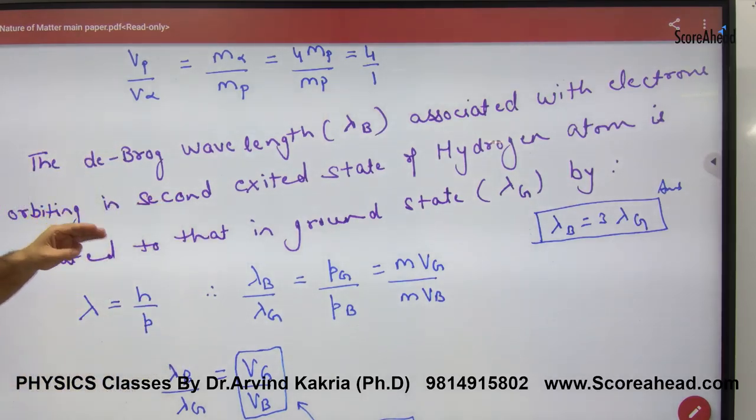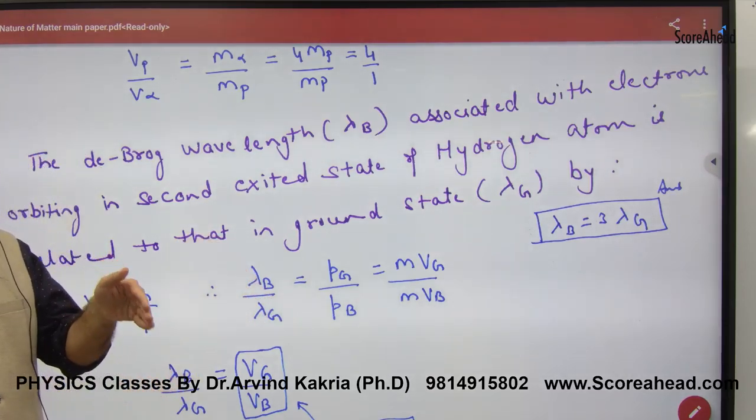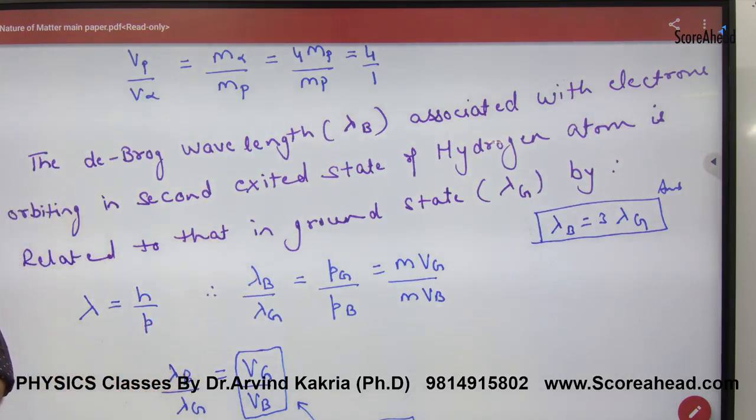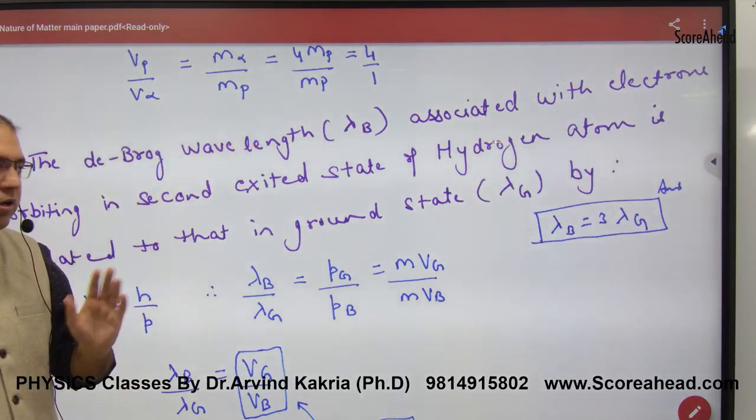This is related to that in ground state, lambda G. One case electron n equals 1, ground state, and one case n equals 3 state. Lambda values given, you have to compare it.